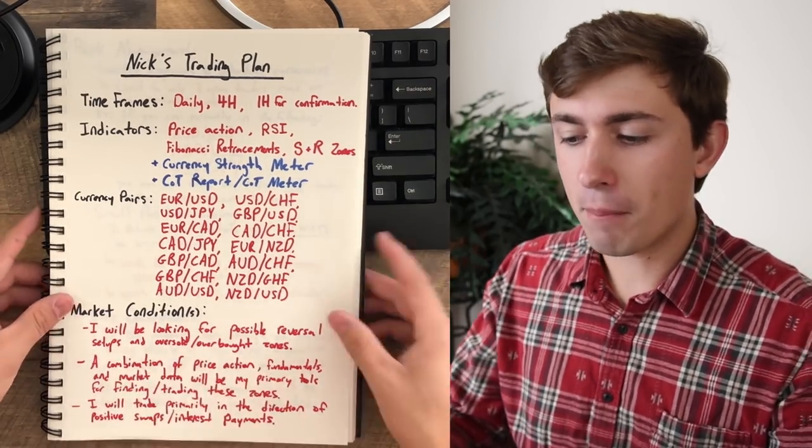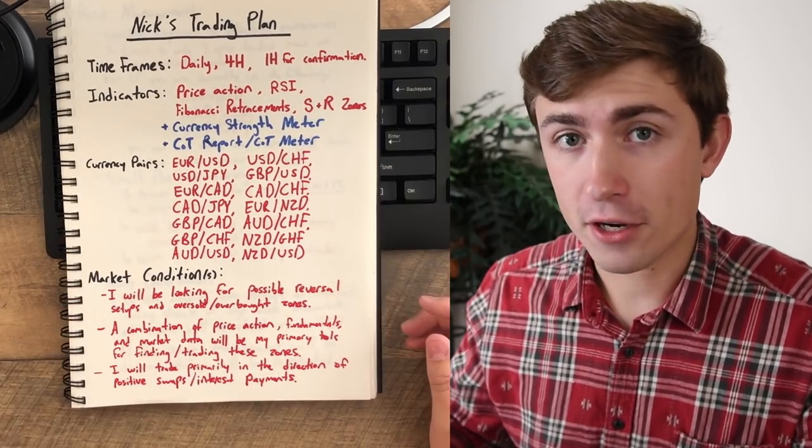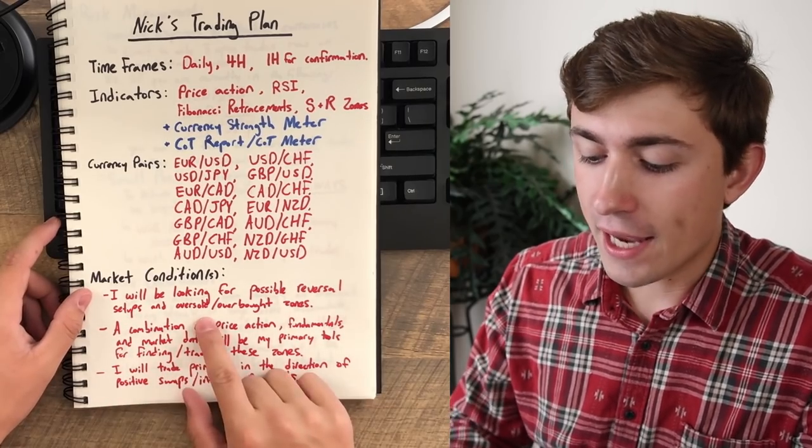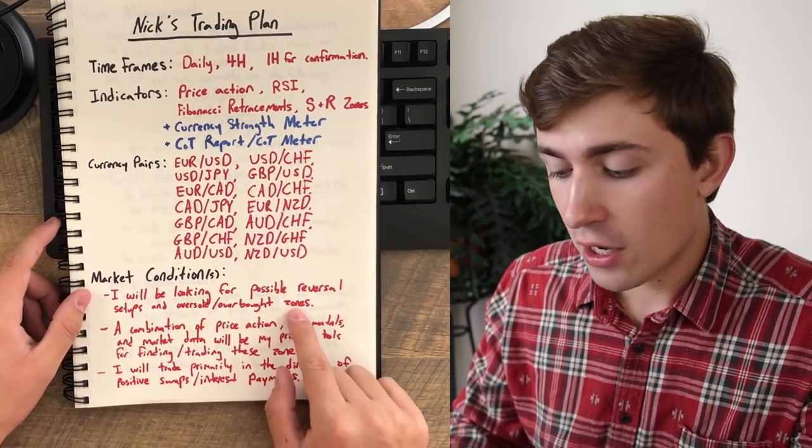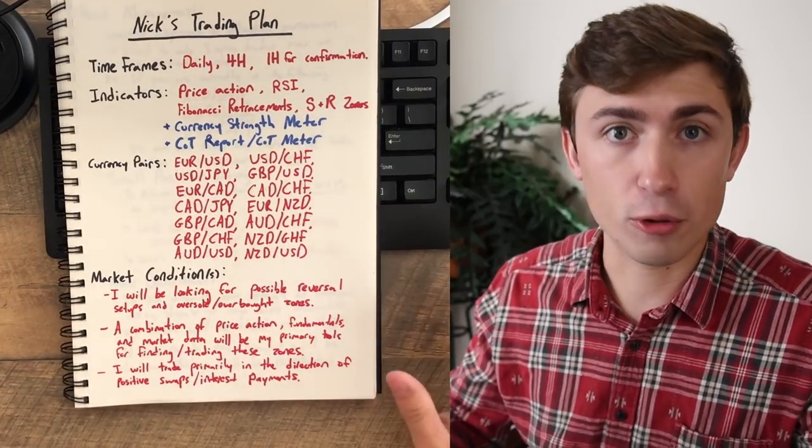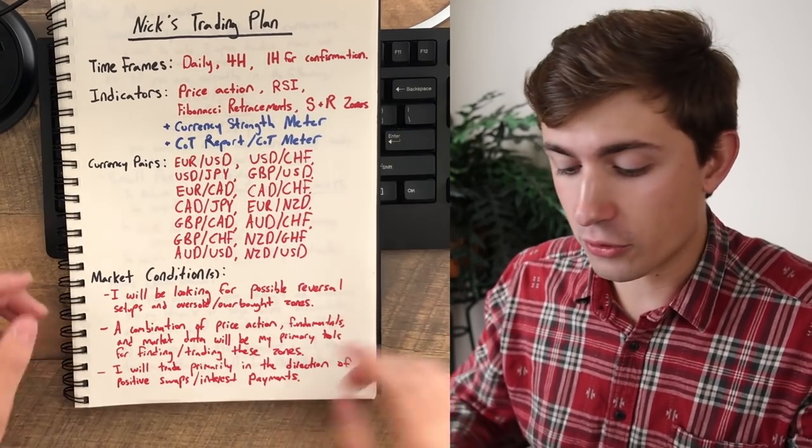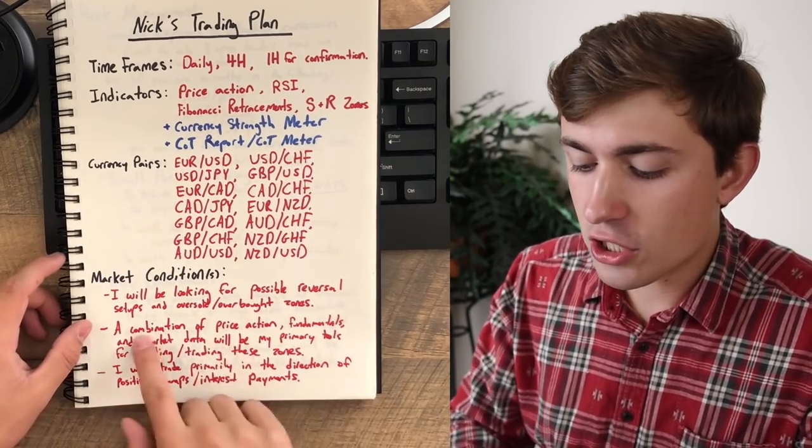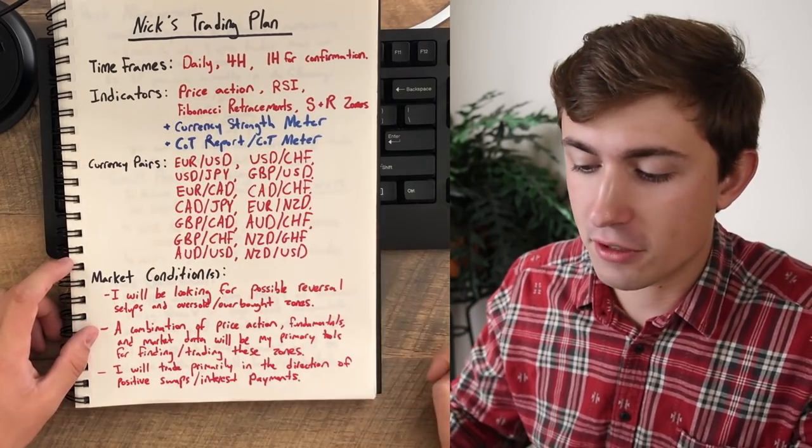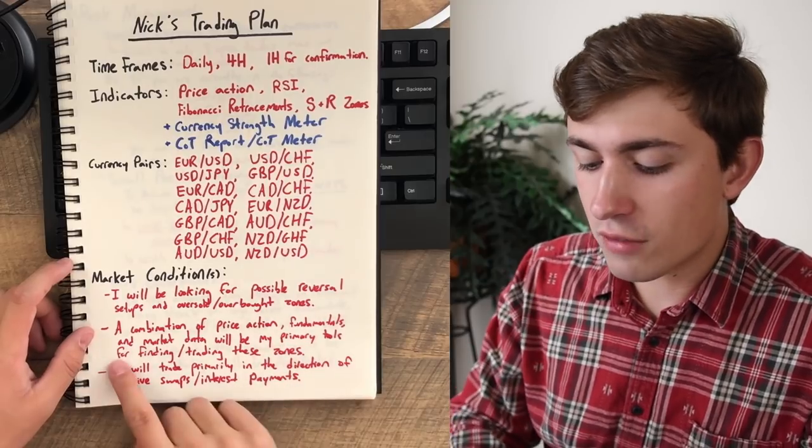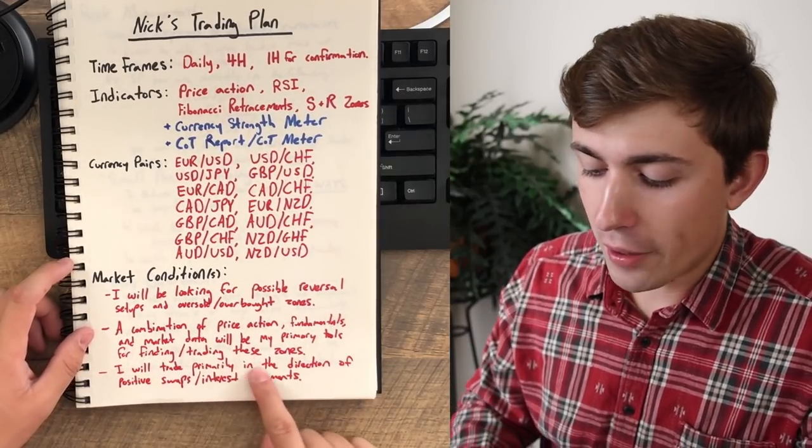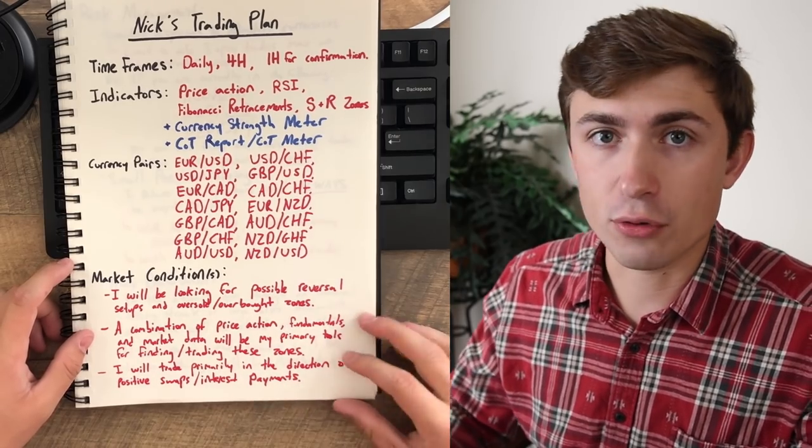Next up, let's talk about the market conditions that I'm actually looking for in my particular trading style. So I've written out here, I'll be looking for possible reversible setups and oversold and overbought levels or zones, right? This is kind of something I look for in my own trading. I look for potential zones of support and resistance that may call for some sort of reversal. Next up, let's talk about a combination of price action, fundamentals, and market data. This stuff over here, the currency strike meter, as well as the COT report will be my primary tools for finding trading setups.